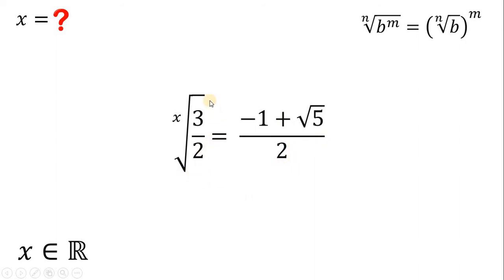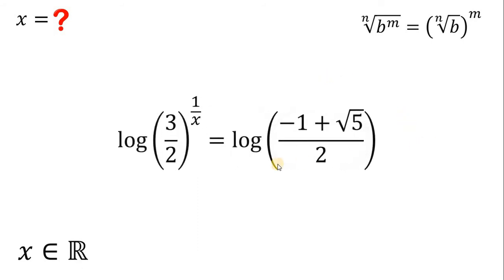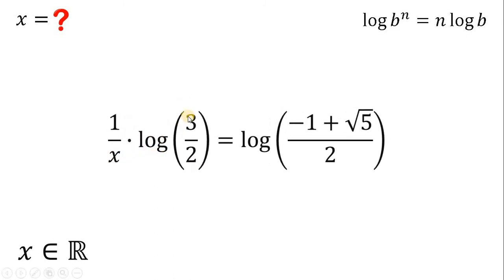Let's simplify the left-hand side. x root of 3 over 2 can be written as 3 over 2 raised to 1 over x. To solve for x, we will use logarithm because x is in the exponent. Taking the logarithm (base 10) on both sides, and using the property that logarithm of b raised to n equals n times logarithm of b, the left-hand side becomes 1 over x times logarithm of 3 over 2.